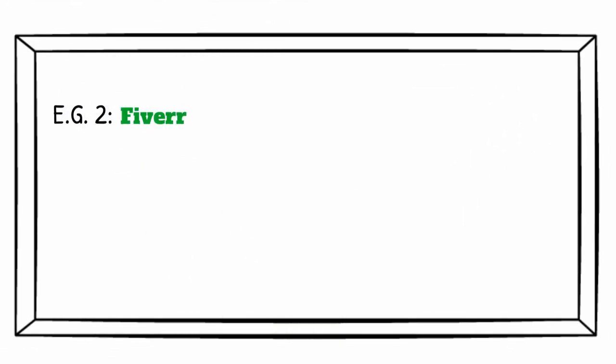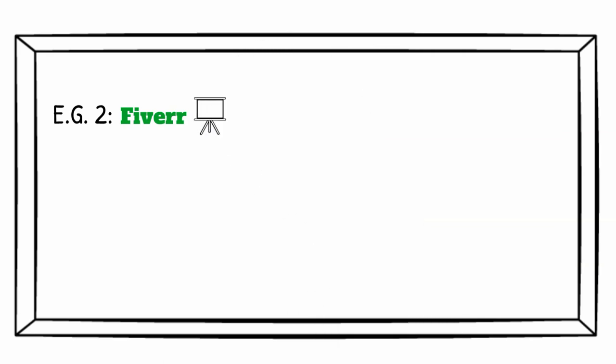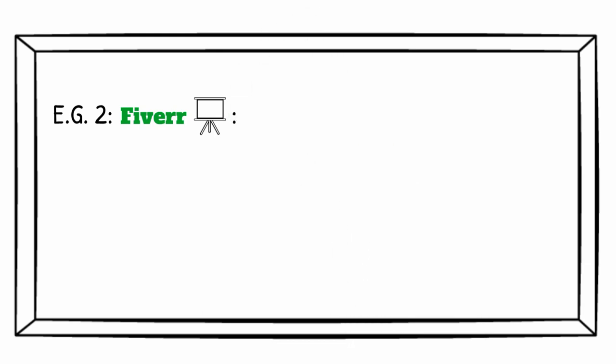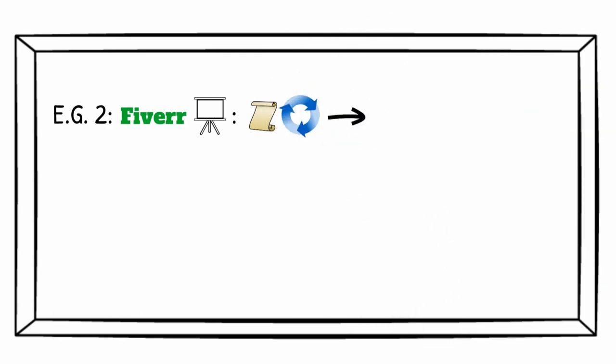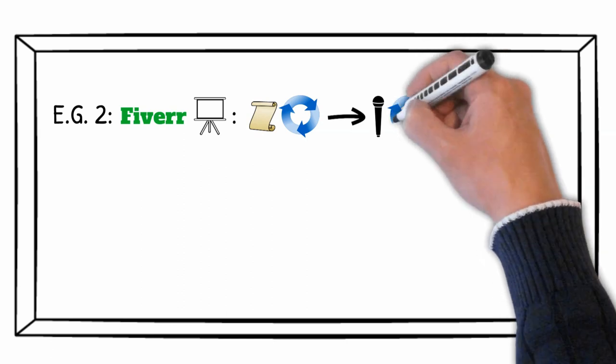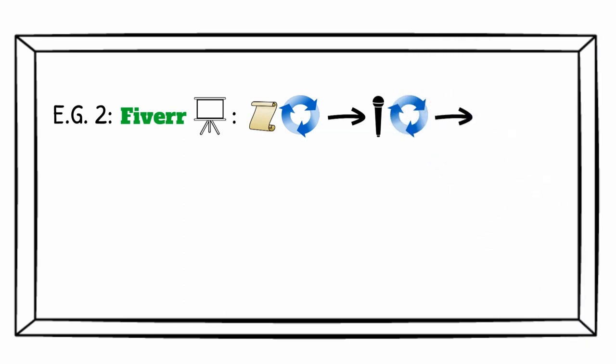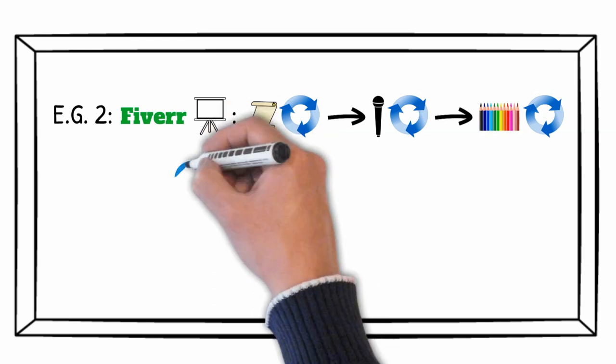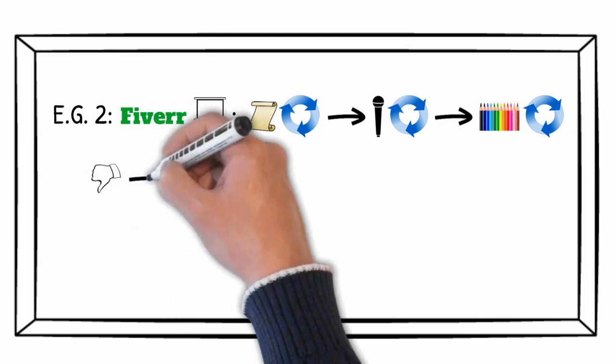The second application example is a Fiverr gig of a whiteboard animation creator I've been working on publishing. In the gig description, I wrote: Even if you've never made a video before, I will script it out, send it to you for revision, then make a voiceover and send that for revision too. After that, the animation will follow. Each of those offers allows the buyer a way to fix the outcome, even if he doesn't like the first one.